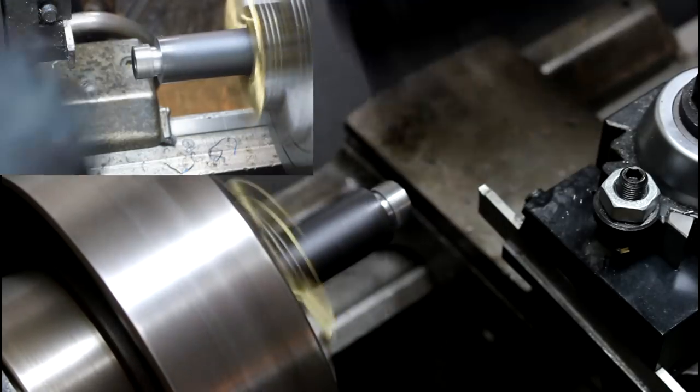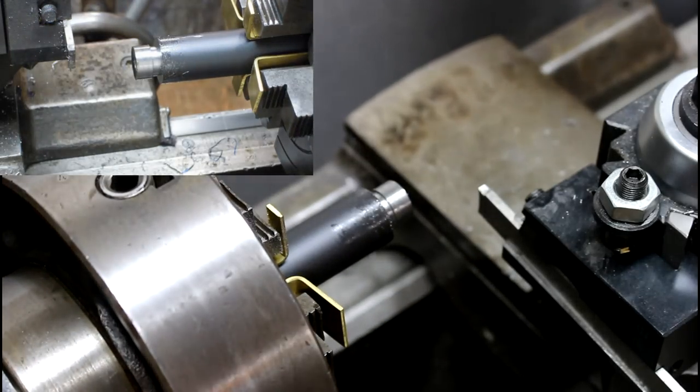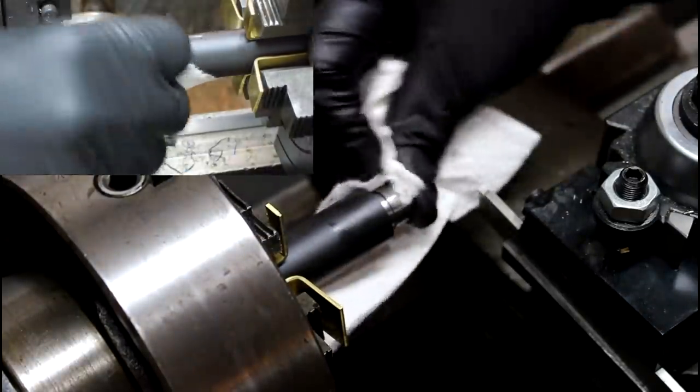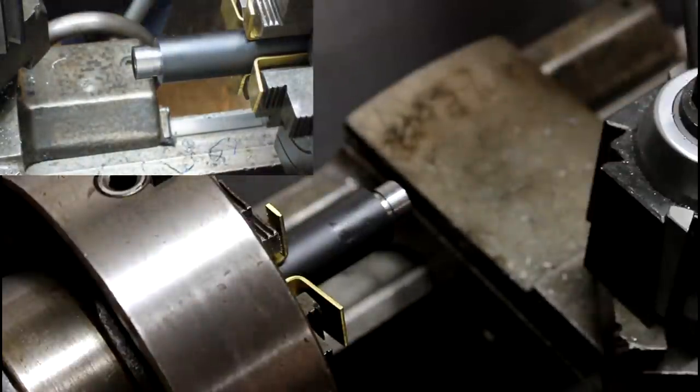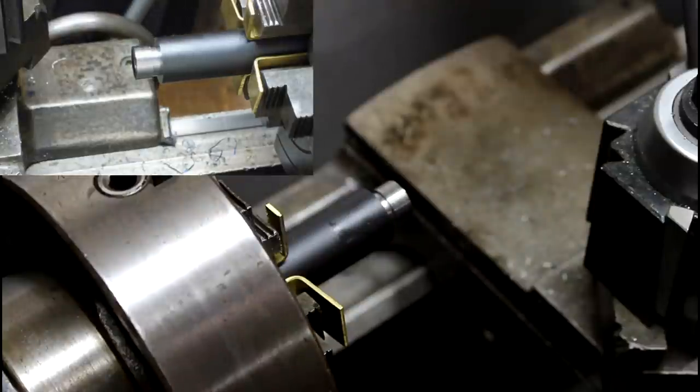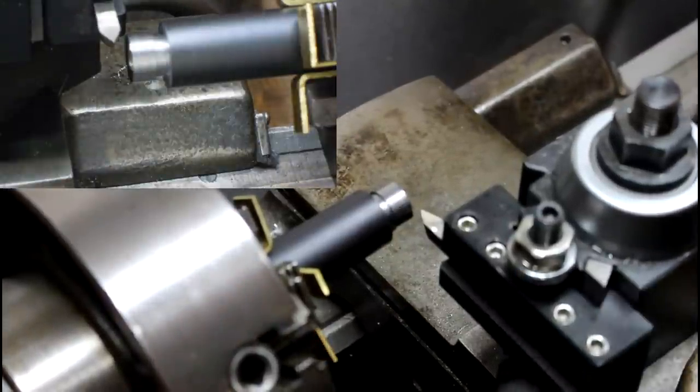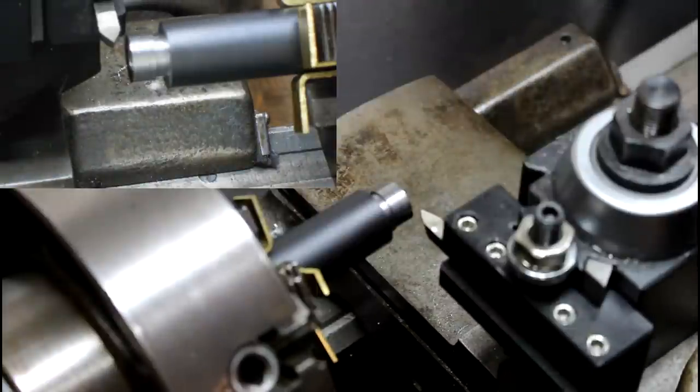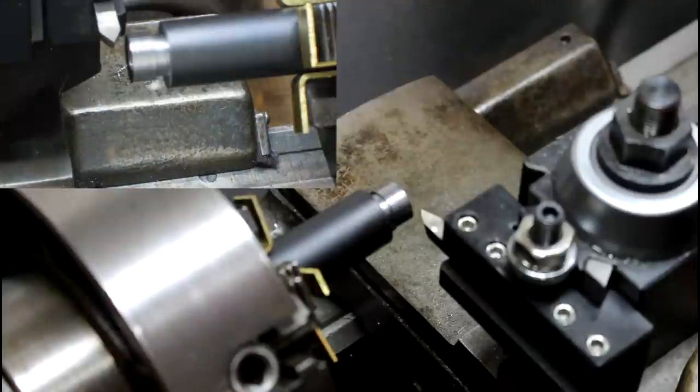All right. Wipe it off here. All right. Now time for threading. So I've got to get my threading bit set up and then we'll continue here in a minute. All right, so I've got everything set up. I've got my threading bit, I've got my compound set at 29 and a half. I've got my threading on my lathe set up to 24 threads per inch. I've slowed my lathe down and we should be ready to make our first cut here.